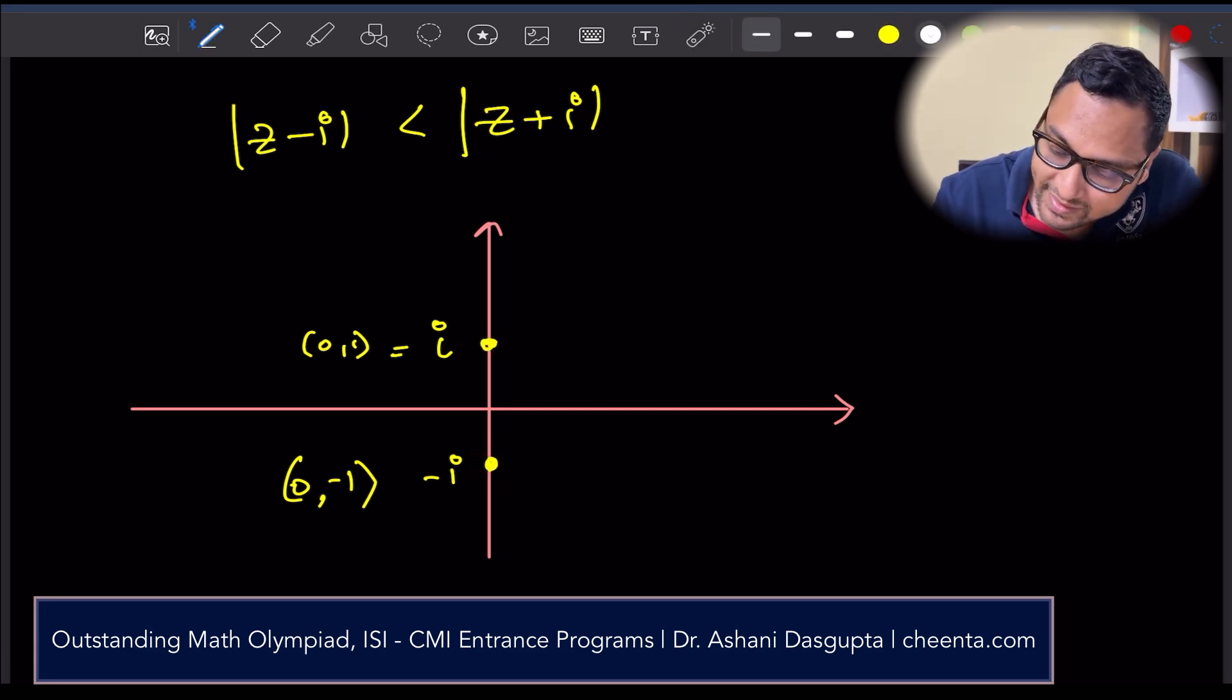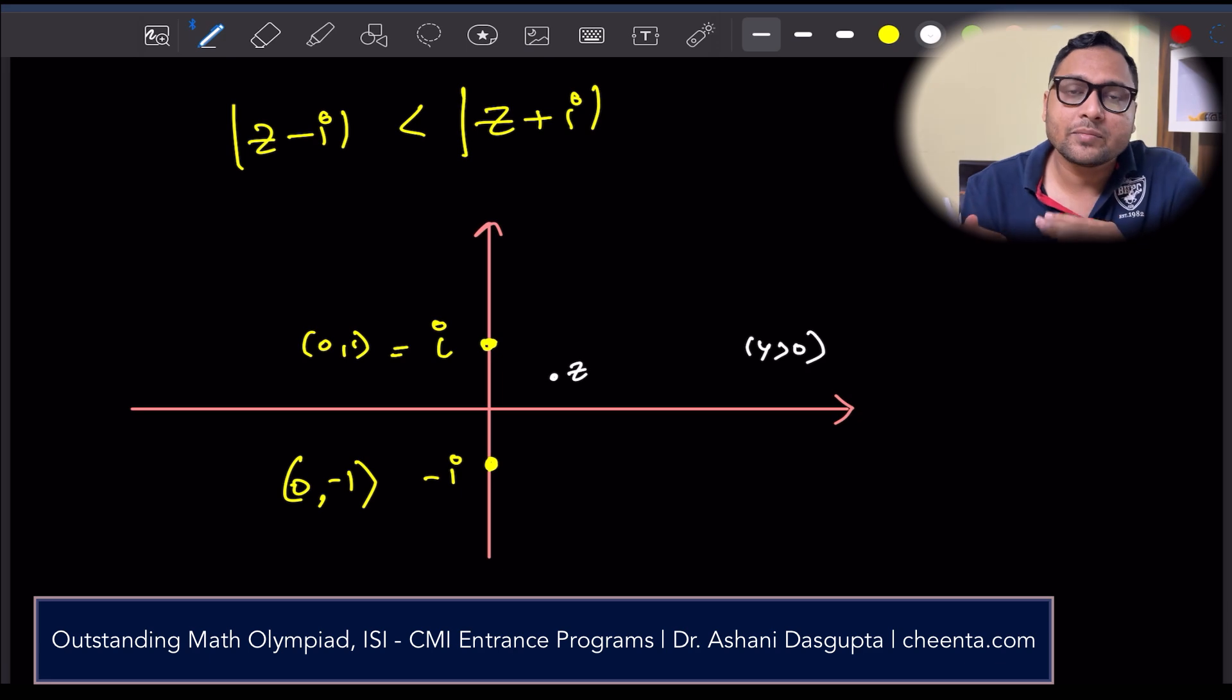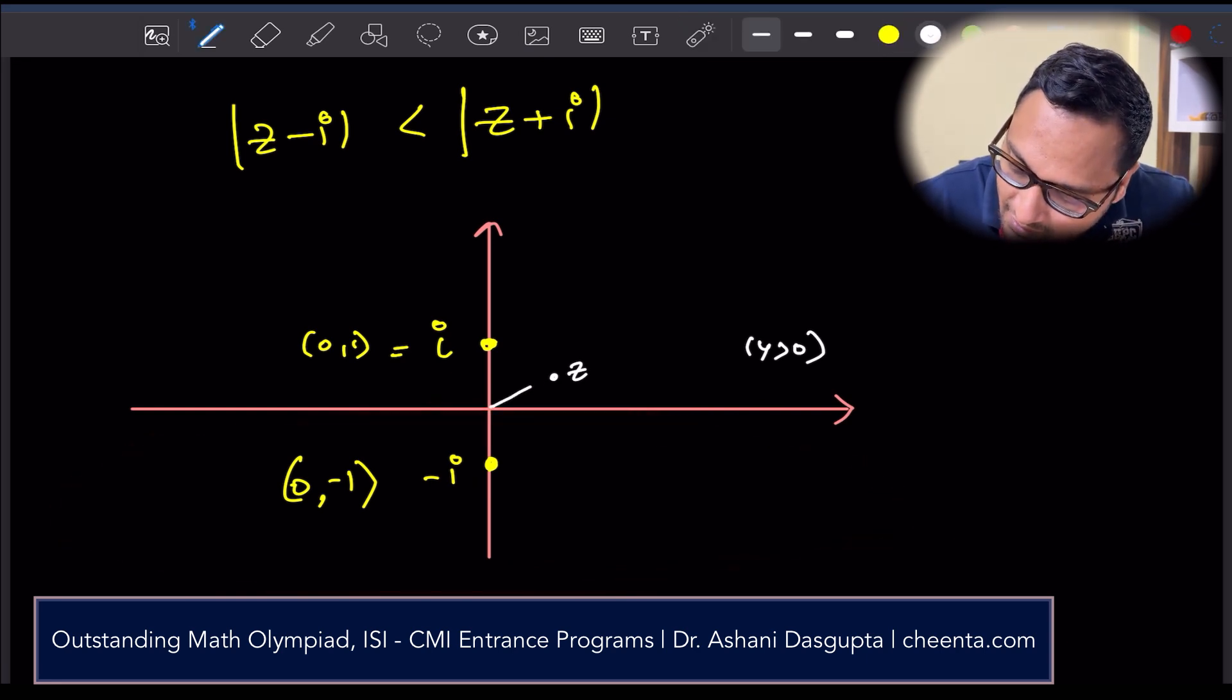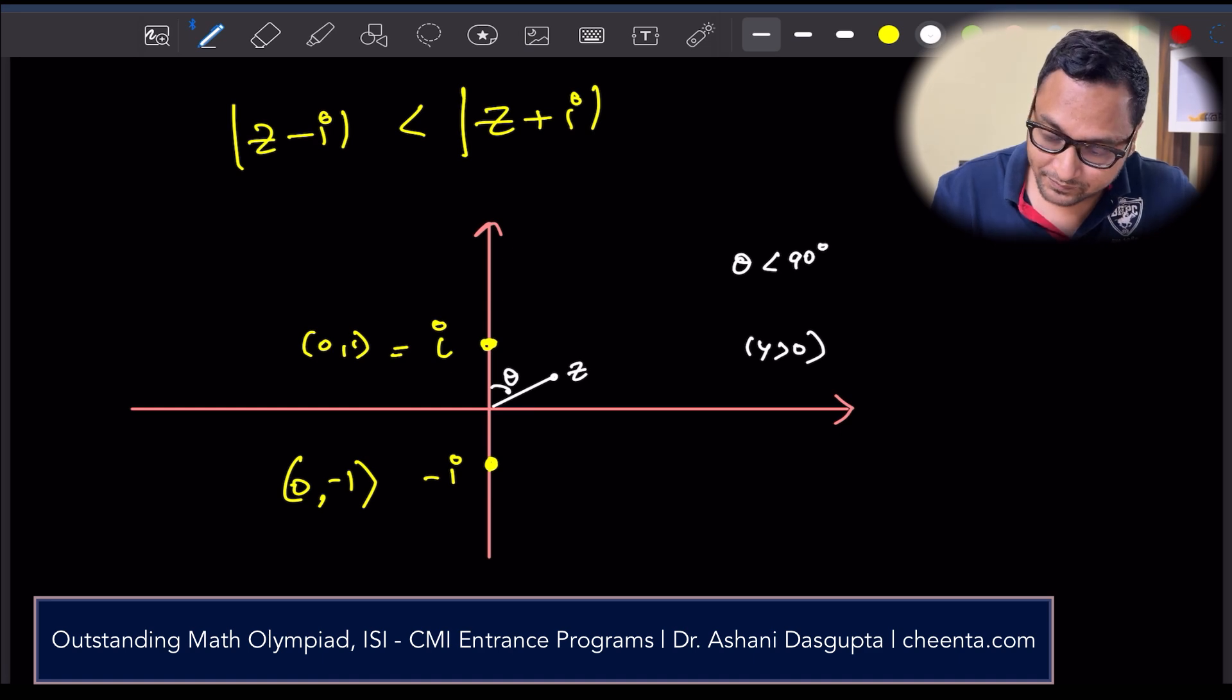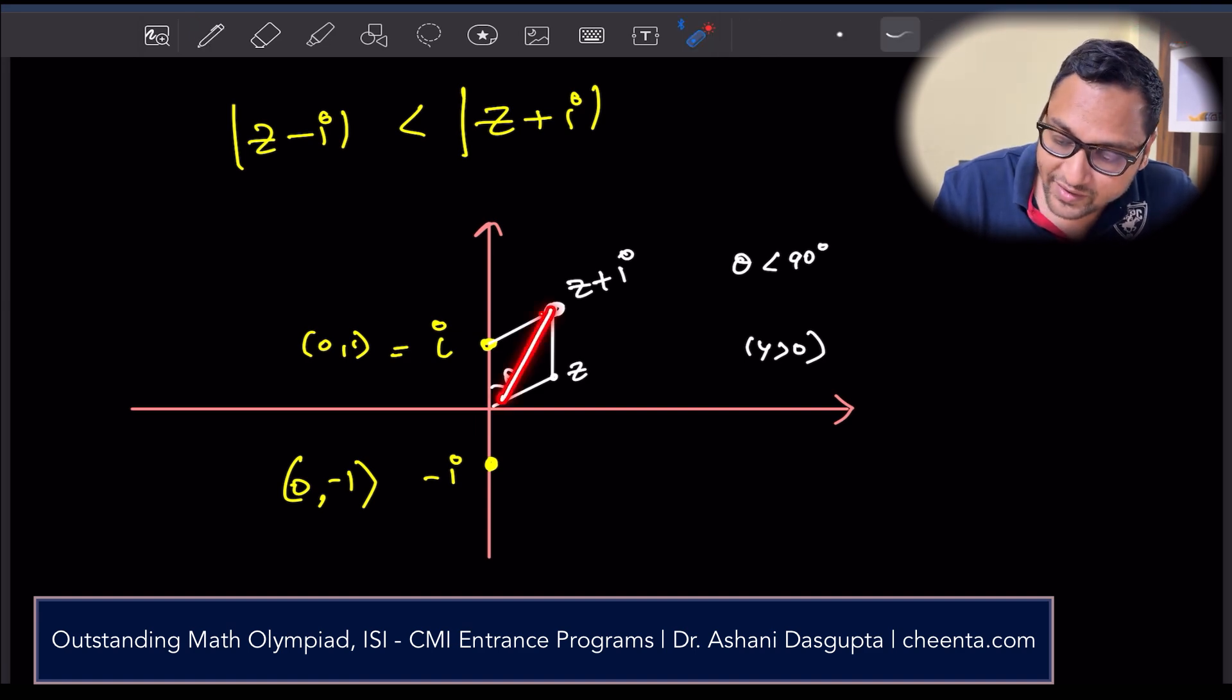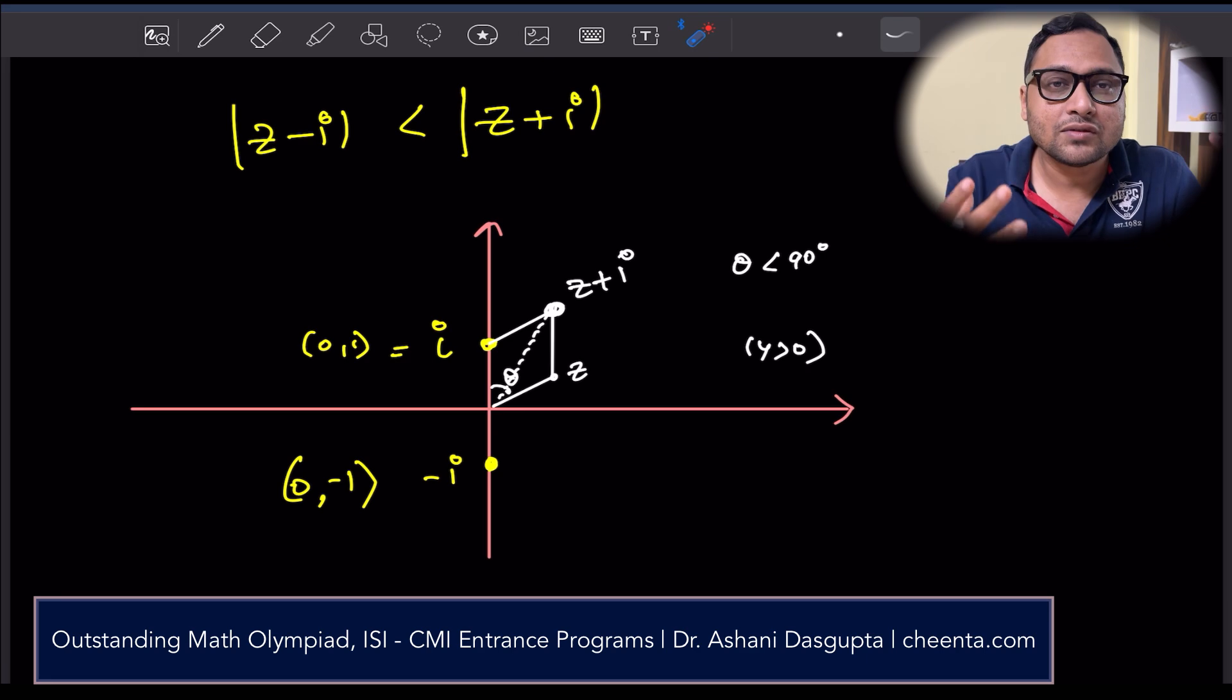Let's take the situation when z is here. z is here means y is greater than 0. y is greater than 0 means it's somewhere here above the x-axis. y is less than 0 means it's somewhere here. It's here means this particular angle theta is less than 90 degrees. Now, let's draw z plus i. z plus i is just simply this particular point. You complete the parallelogram. This is z plus i and this is the corresponding vector.